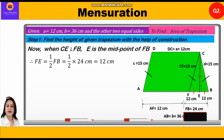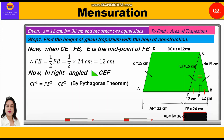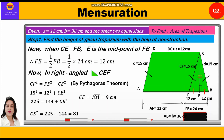In right-angle triangle CEF, by Pythagoras theorem: CF² = FE² + CE². Substituting: 15² = 12² + CE², so 225 = 144 + CE². Therefore CE² = 225 − 144 = 81. CE = √81 = 9 cm. Therefore H = 9 cm — the height of the trapezium is 9 cm.